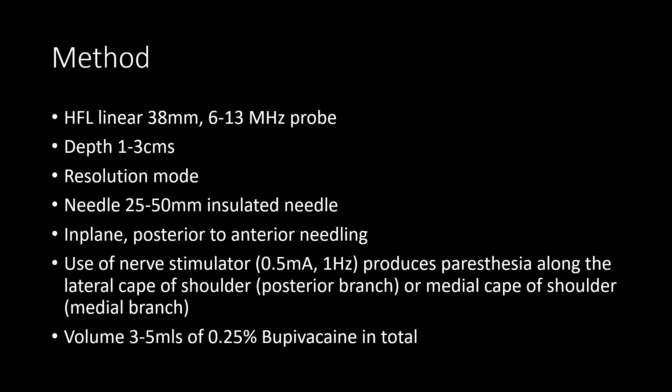The technique is similar to an interscalene brachial plexus block. Scanning is performed with a high frequency linear probe at 6 to 13 megahertz, with a depth setting of 1 to 3 centimeters in resolution mode. The neck is scanned at the level of C6 to identify the C5, C6, and C7 nerve roots, then scanning is continued cephalad to the level of C4. A 25 to 50 millimeter insulated needle is inserted from posterior to anterior, and a typical volume of 3 to 5 mls of 0.25% bupivacaine is used. If a nerve stimulator is used, paresthesia can be elicited in the lateral or medial cape of the shoulder, depending on which branch of the supraclavicular nerve is in contact.